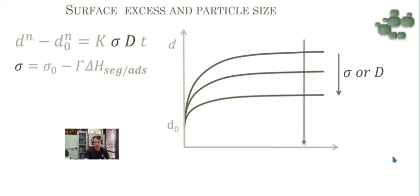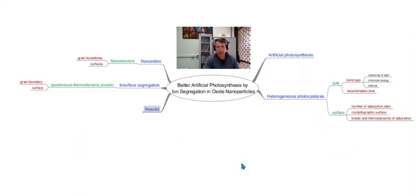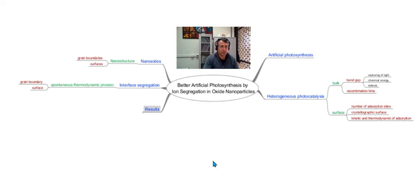As a direct consequence, there is an increase of specific surface area even after long calcination times. Now I want to show you some results about our work in photocatalysis and try to connect surface segregation with photosynthesis, and how photosynthesis could be improved with ion segregation.